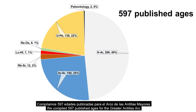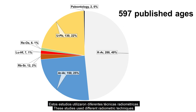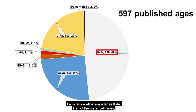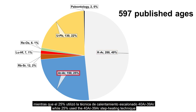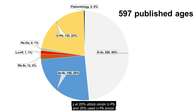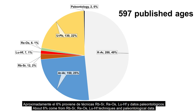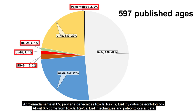We compiled 597 published ages for the Greater Antilles Arc. This study uses different radiometric techniques: half of them are potassium-argon ages, while 25% use argon-argon stepped heating techniques, and 20% use uranium-lead zircon. About 6% come from Rubidium-Strontium, Rhenium-Osmium, Lutetium-Hafnium techniques, and paleontology data.